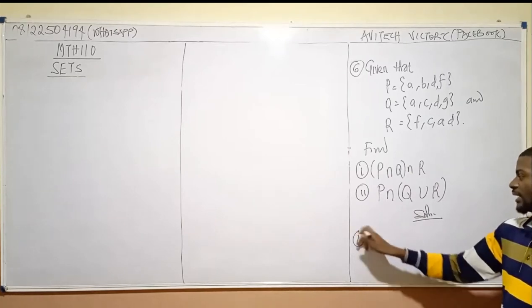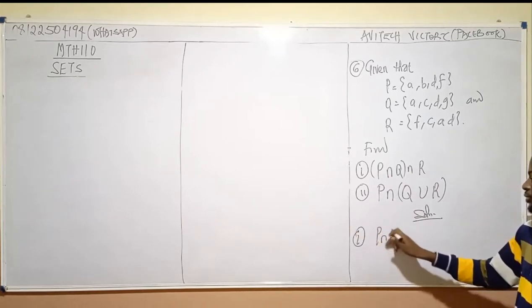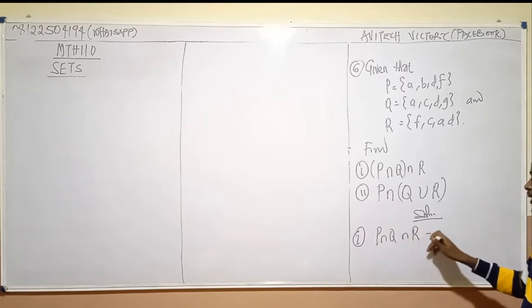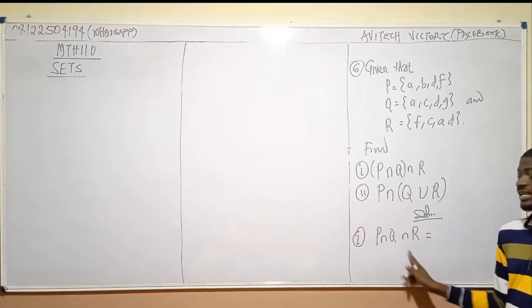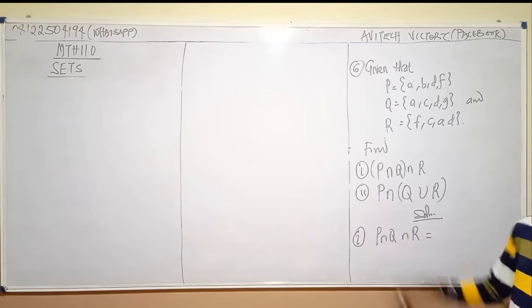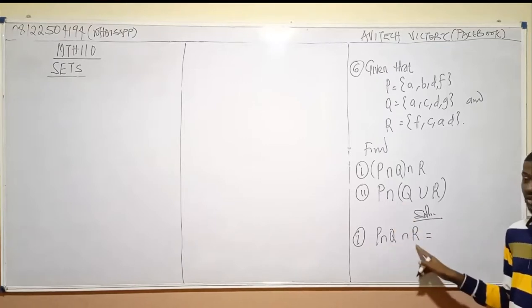I'm going to say one, which is P intersection Q intersection R. Since all the symbols are the same, the answer is just all that is common between the three sets.